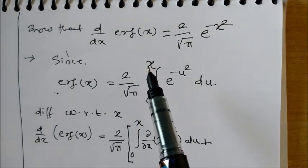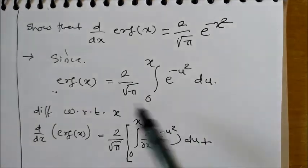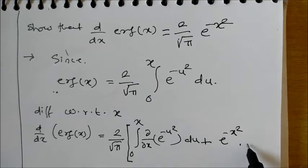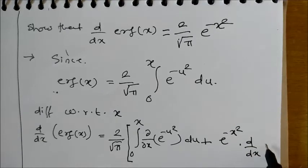by the upper limit. The upper limit is x, so e^(-x²) times d/dx of x